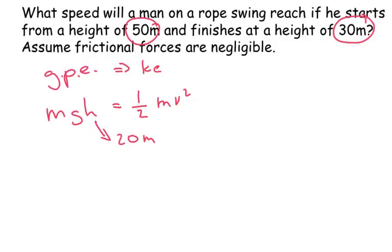So we just put h there is going to be 20 metres. Now that's all turning into kinetic energy, which is half mv squared. If you look at both sides, the m's are going to cancel out.